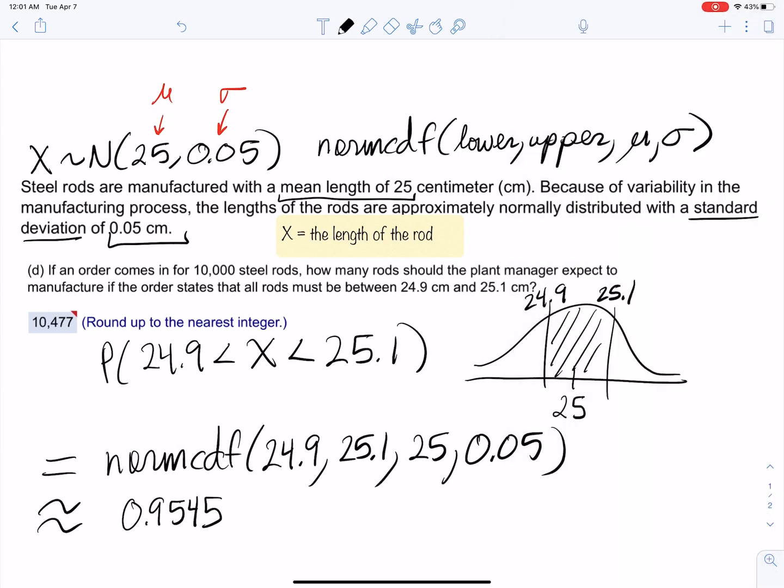That's the percentage of rods that would be accepted, about 0.9545. The second phase of this question - an order comes in for 10,000 rods. That's how many we need. But if some of them are rejected, you need to produce more than 10,000 in order to get 10,000 accepted.